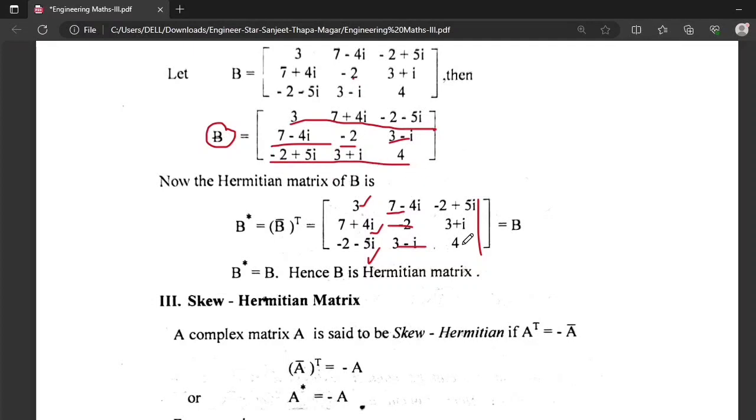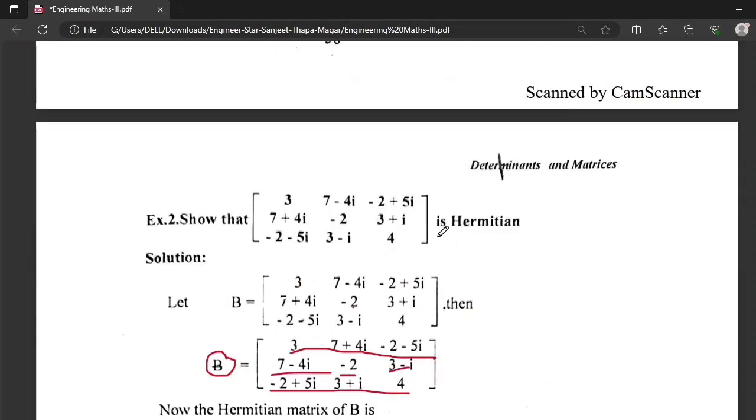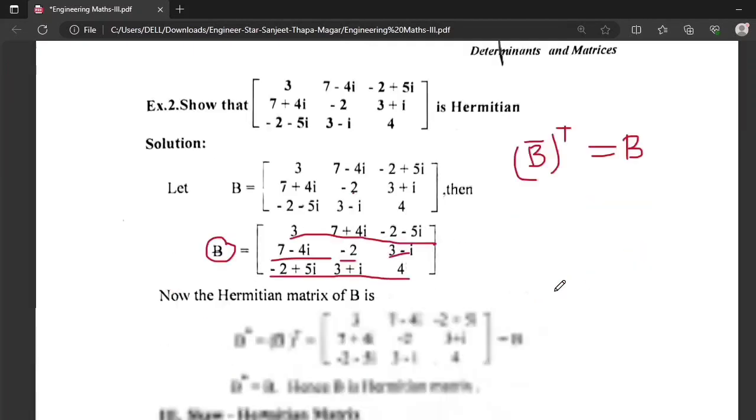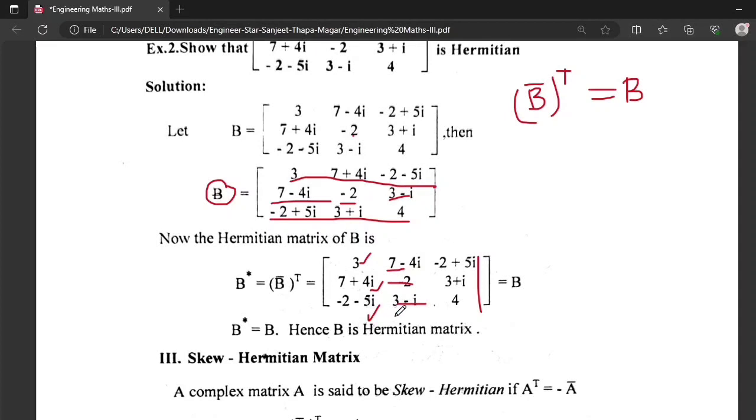We have to show that this is Hermitian. For any matrix to be Hermitian, then the conjugate transpose should be equal to that matrix. So conjugate transpose is this, which should be equal to the original matrix.